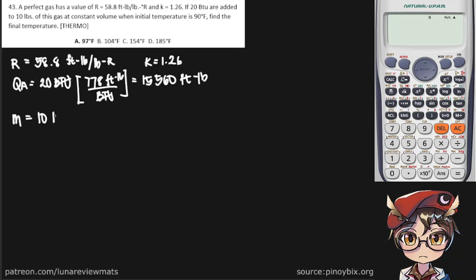20 BTU are added to 10 pounds of gas — that's our mass — at constant volume. Volume is constant, and the initial temperature is 90 degrees Fahrenheit, which is equal to 550 degrees Rankine.